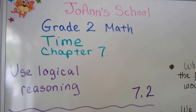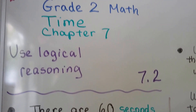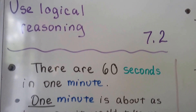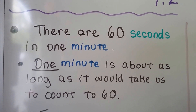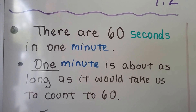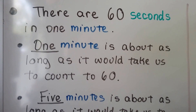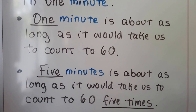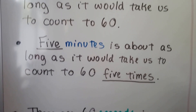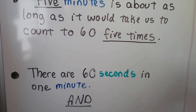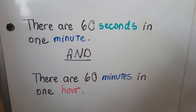This chapter is all about time and we're going to talk about using logical reasoning. This is lesson 7.2. As we said in the previous video, there are 60 seconds in one minute, and one minute is about as long as it would take to count to sixty. Five minutes is about as long as it would take to count to sixty, five times. There are 60 seconds in one minute and 60 minutes in one hour.